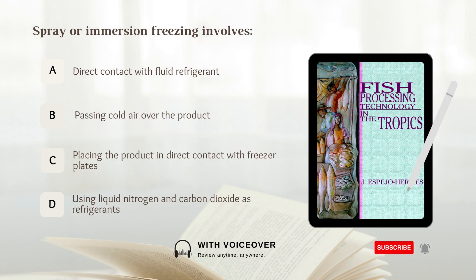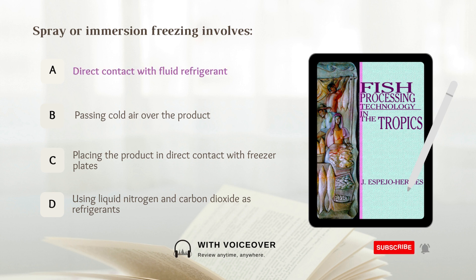Spray or immersion freezing involves: A. Direct contact with fluid refrigerant. B. Passing cold air over the product. C. Placing the product in direct contact with freezer plates. D. Using liquid nitrogen and carbon dioxide as refrigerants. Answer: A. Direct contact with fluid refrigerant.